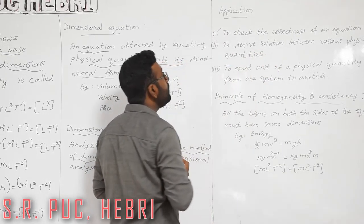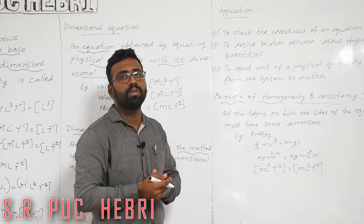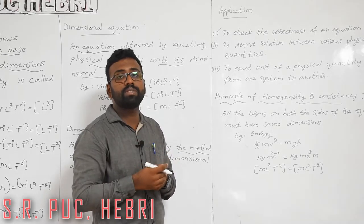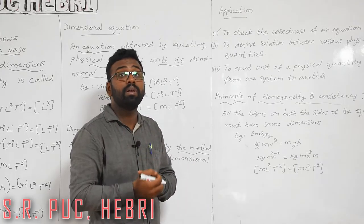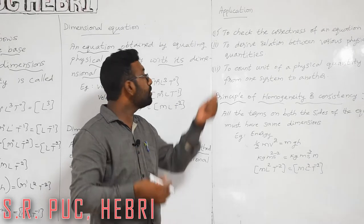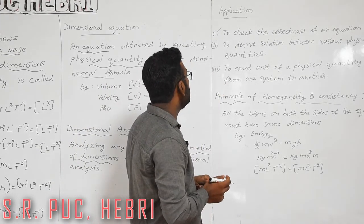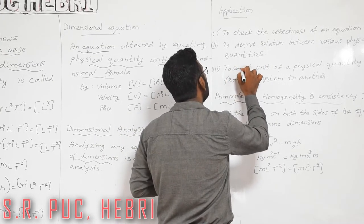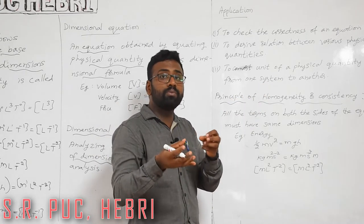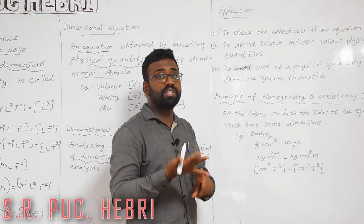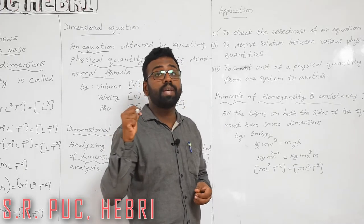The next application is to derive a relation between various physical quantities — for example, how length and time relate to velocity. Another application is to convert the unit of a physical quantity from one system to another system. When converting from one system to another you need the help of dimensional analysis to get a correct conversion.